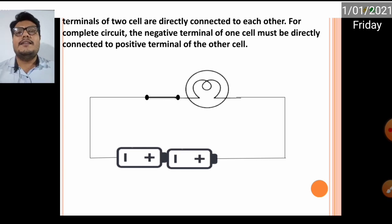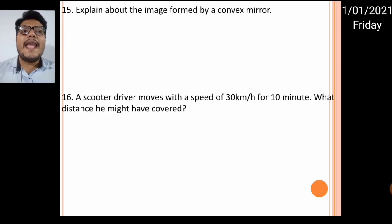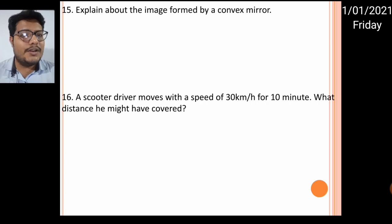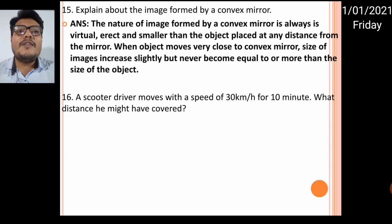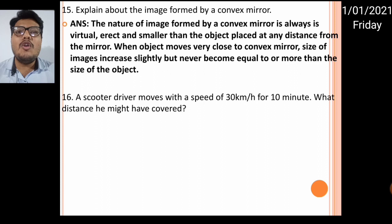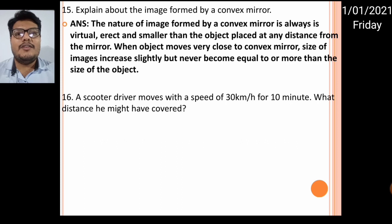You need to draw the corrected circuit as the answer in the exam. Next: explain the image formed by a convex mirror. The image formed by a convex mirror is always virtual, erect, and smaller than the object. When the object moves very close to the convex mirror, the image size increases but never becomes larger than the original size of the object.